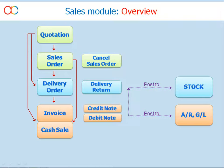In AutoCount, the Sales module is fully integrated with the Stock, AR, and GL modules, which means whenever relevant, transactions in the Sales module will automatically update the entries or reports in those modules. The Sales module provides a full range of sales documents, and it is up to the user to make use of all these documents or selectively according to their needs.